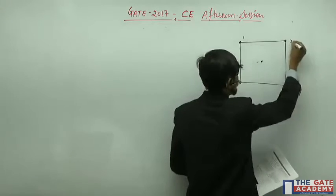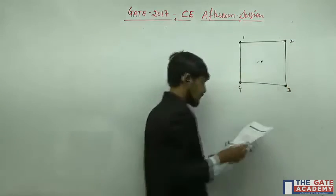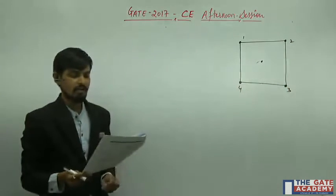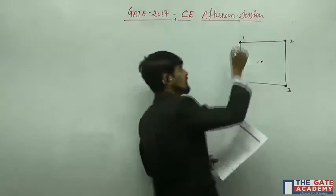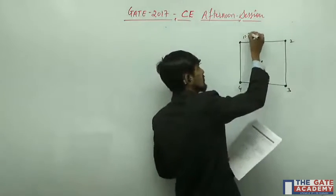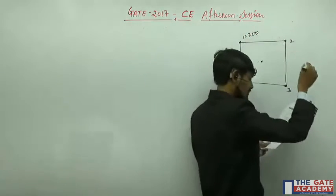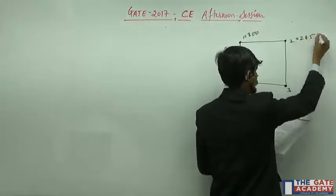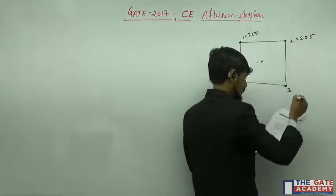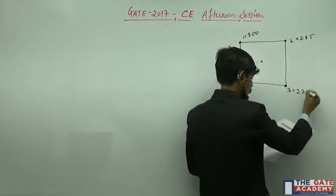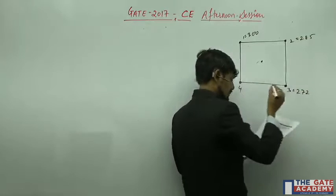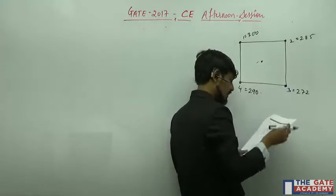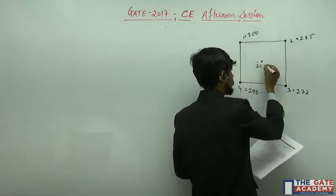The stations are numbered 1, 2, 3, 4 at the corners. The precipitation values given are: station 1 = 300, station 2 = 300, station 3 = 285, station 4 = 272, station 5 = 290, and at the center it is 288.